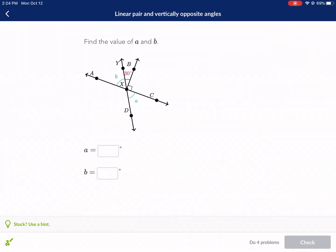Welcome everyone to another Khan Academy tutorial. Today we're doing linear pair and vertically opposite angles. Let's jump right into this.